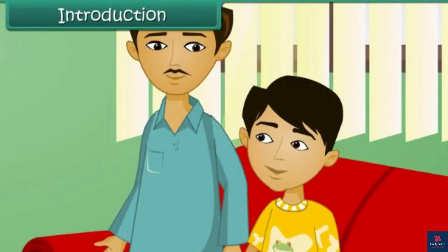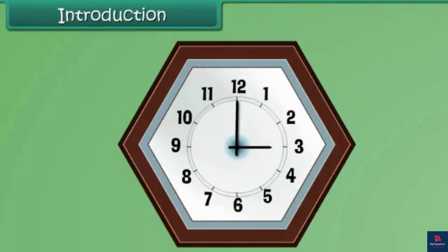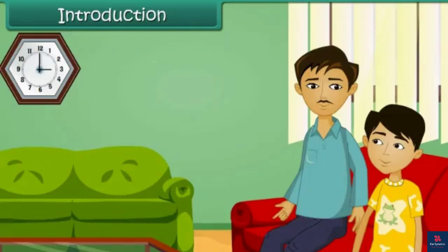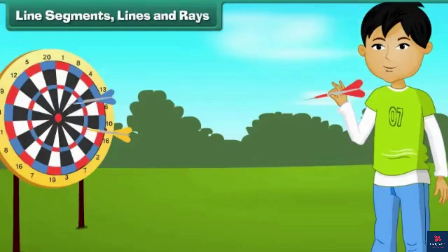Great! Can you also comment on the shape of the clock, Vijay? Sure! The clock has six sides and it's a hexagon. Wonderful, Vijay! You have learnt your geometry well. Children, in this lesson, you will learn the basics of geometry: line segments, lines and rays.